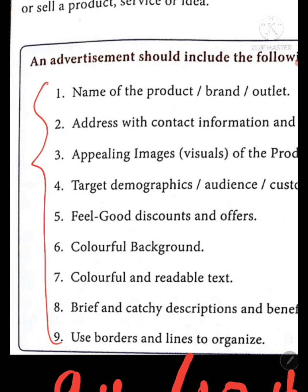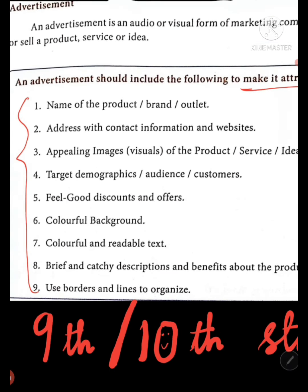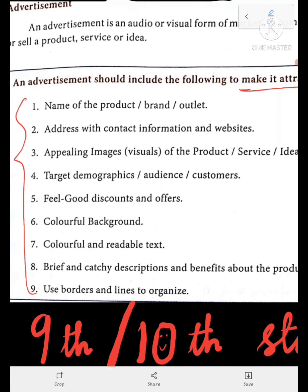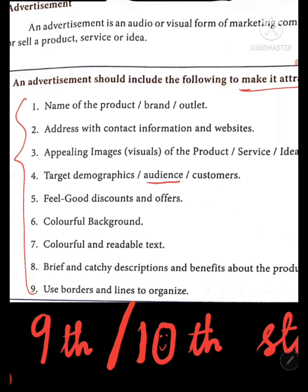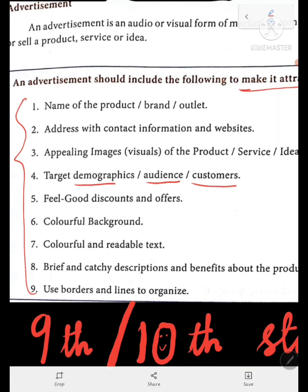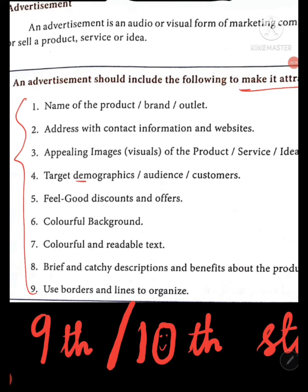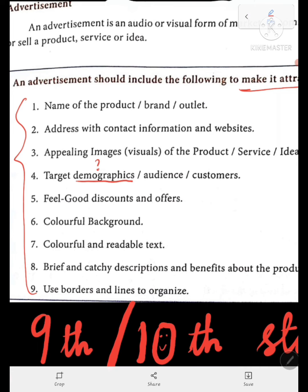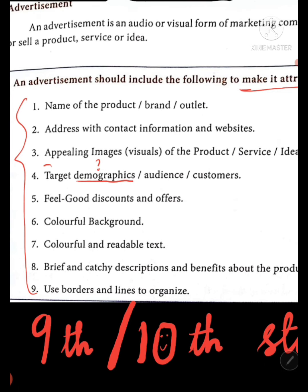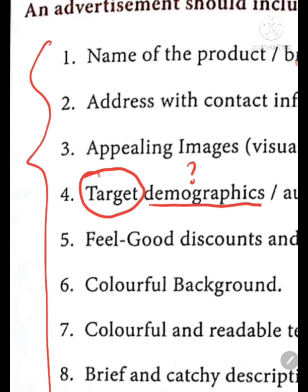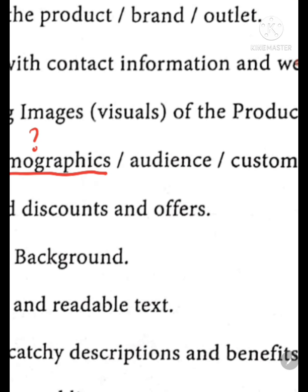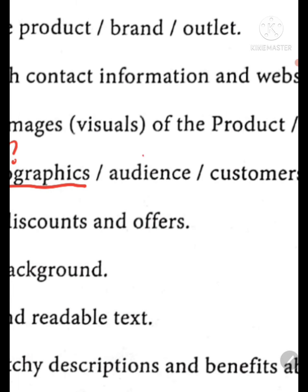You have nine points in your textbook. You have to follow these points and you have to target your audience, or the customer, or demographics. Demographics is nothing but a group of people. For example, the washing machine is for ladies, so you have to target those layers — that group is demographics.